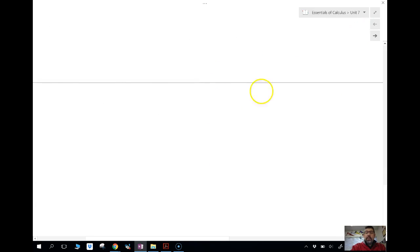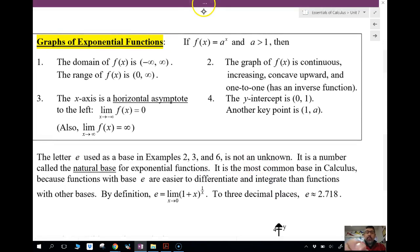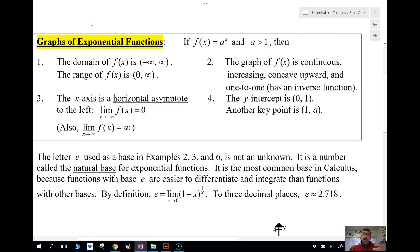Here are some basic things about graphing exponential functions. The domain is going to be from positive infinity to negative infinity, just like we saw. The range is going to be from 0 to infinity because we have a horizontal asymptote at the x-axis. The graph of f is going to be continuous. It's going to increase and be concave upward. It's also going to be a 1 to 1 function, which means it has an inverse that's also a function. And the y-intercept is always going to be 0 to 1, as long as it's in this form.